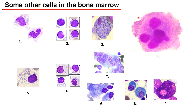Now, some other cells we can see in the bone marrow as well. There are some cells that have a lobulated nucleus, blue cytoplasm, and some vacuolation in it. The size of the cells can vary from 20 to 26 micrometers, and because of this lobulated nucleus, these cells are the monocytes.